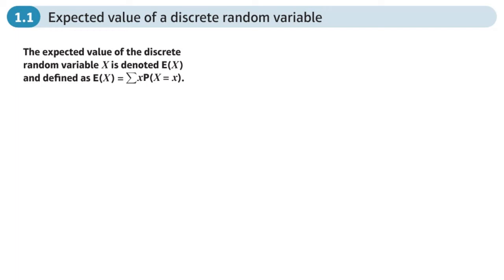This is the first section of chapter one from the further statistics book on discrete random variables. The first section here is the expected value of a discrete random variable.